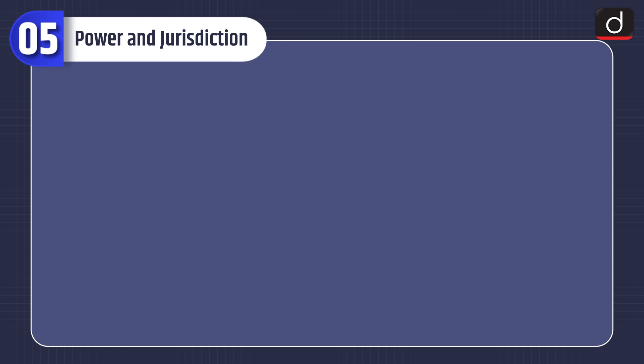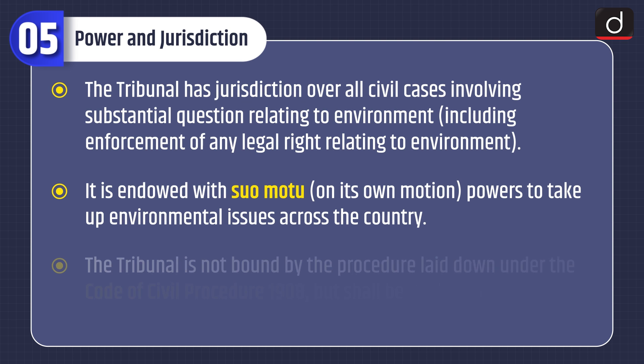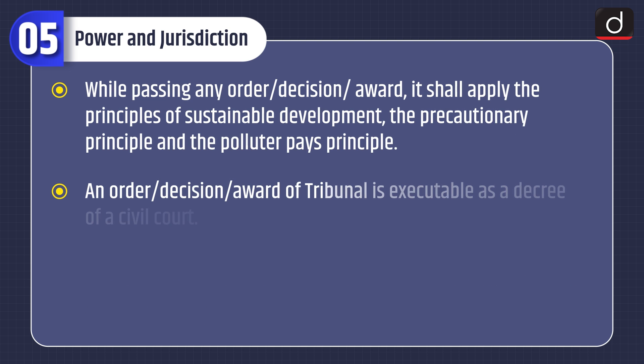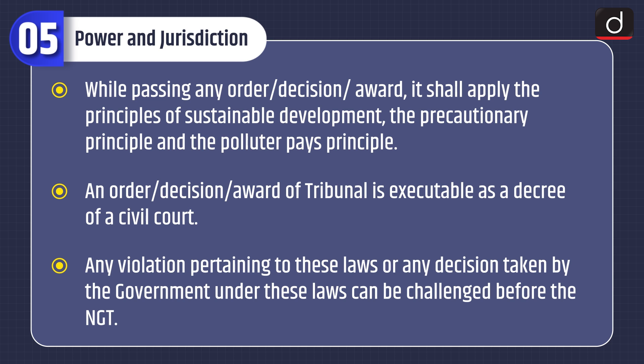Moving on to powers and jurisdiction. The tribunal has jurisdiction over all civil cases involving substantial questions relating to environment, including enforcement of any legal right relating to environment. It is endowed with suo-motu powers to take up environmental issues across the country. The tribunal is not bound by the procedure laid down under the Code of Civil Procedure 1908, but shall be guided by principles of natural justice. While passing any order, decision or award, it shall apply the principles of sustainable development, the precautionary principle and the polluter-pays principle. An order, decision or award of the tribunal is executable as a decree of a civil court.